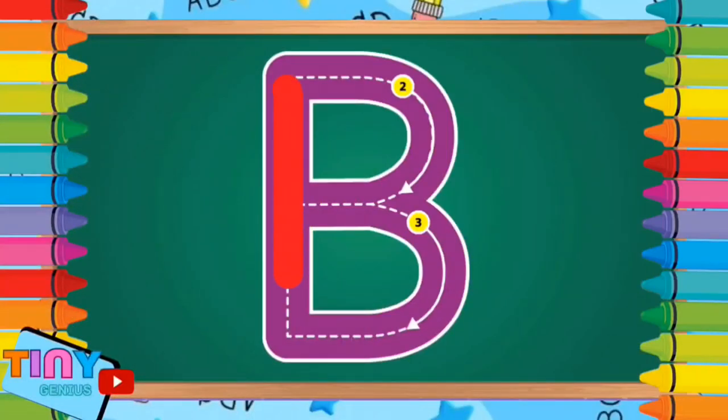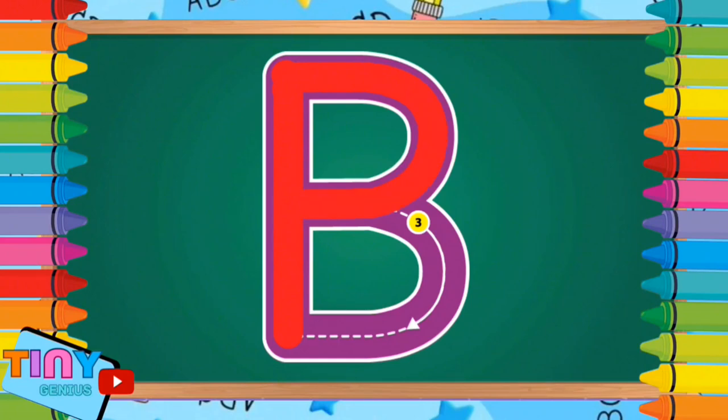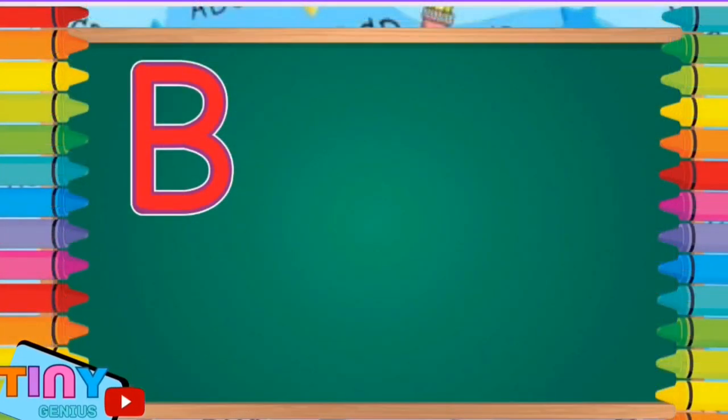Next letter is B. Pull down. Go to the top, around and in. Back to the middle and around again. B is for bear.